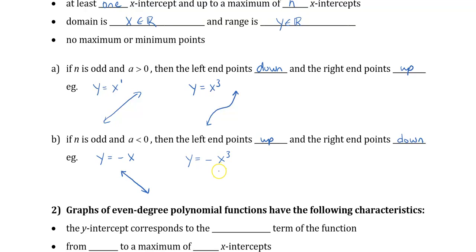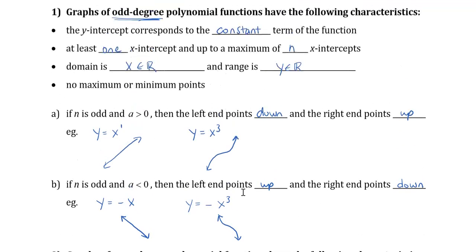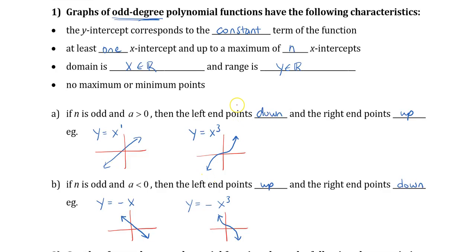For negative odd-degree polynomials, the left end points up and the right end points down. Going back to the characteristics: if you draw in an axis on any of these graphs, you can see there's only one y-intercept, and there's always at least one x-intercept, with a maximum of n x-intercepts. The domain is all real numbers because the graph extends left and right, and the range is also all real numbers as it extends up and down.